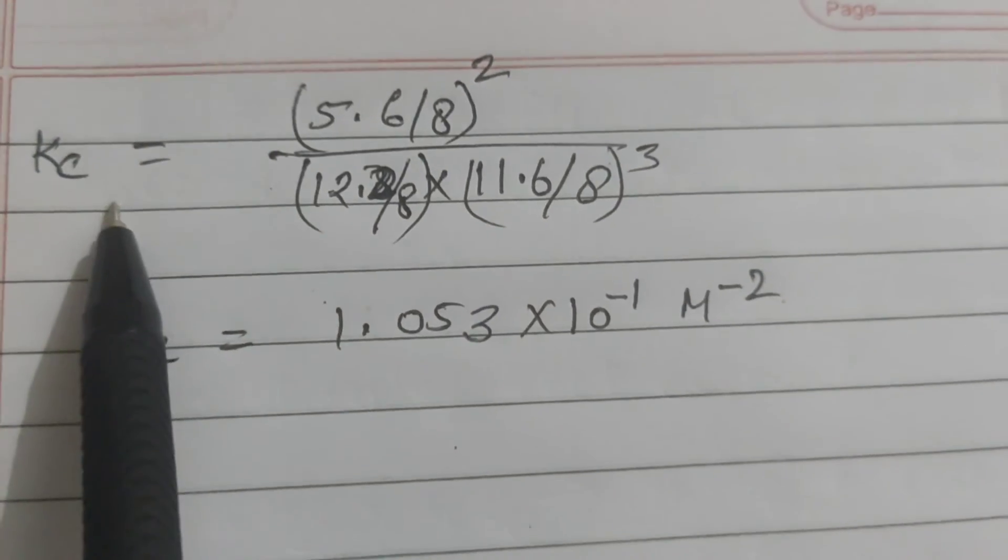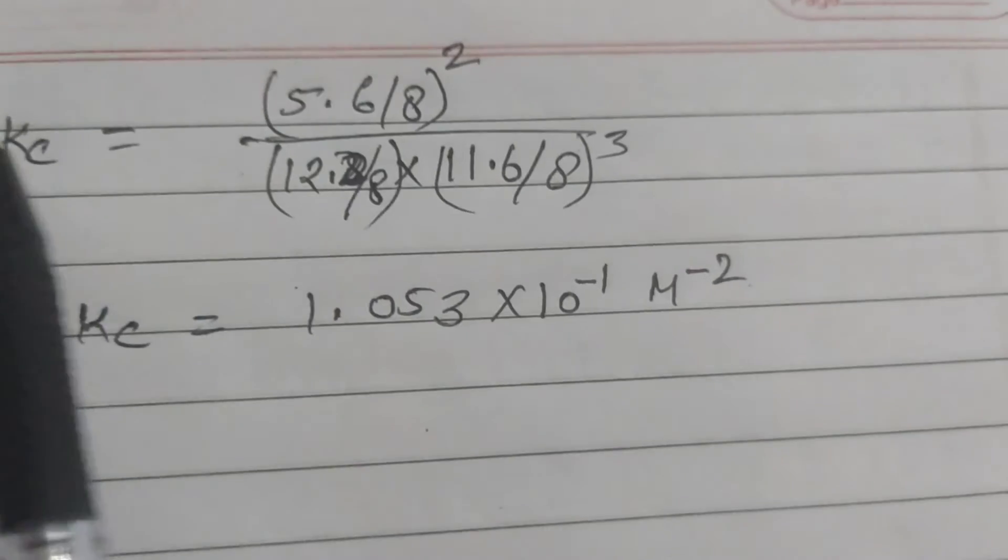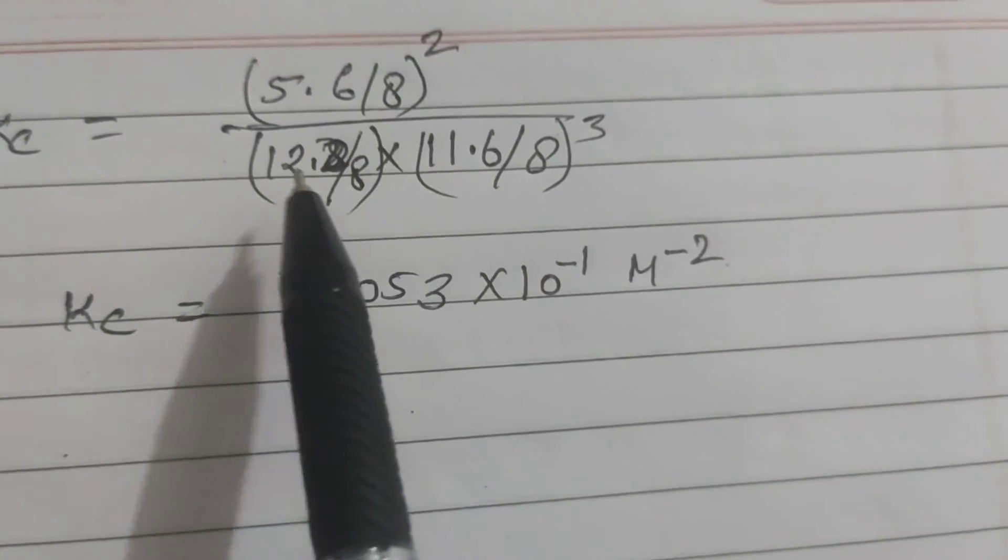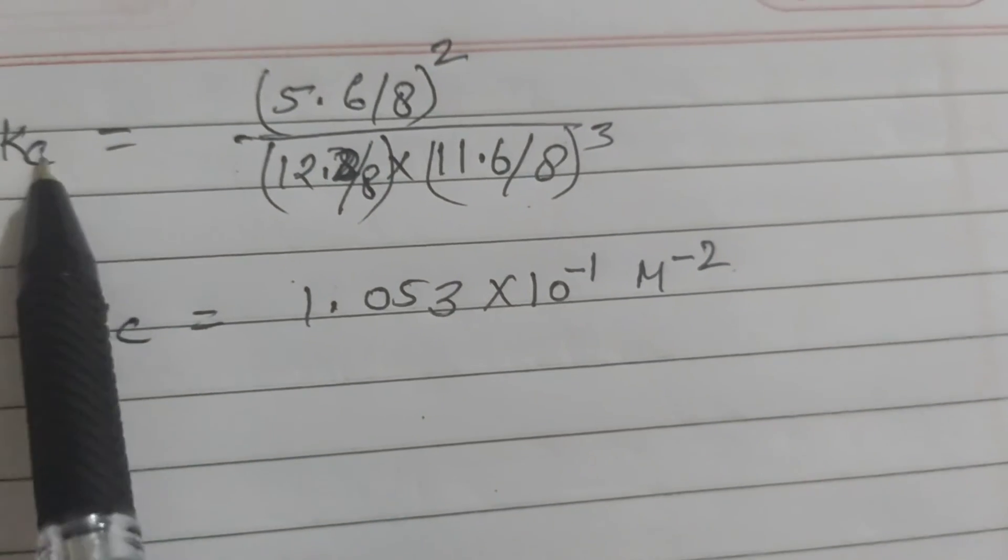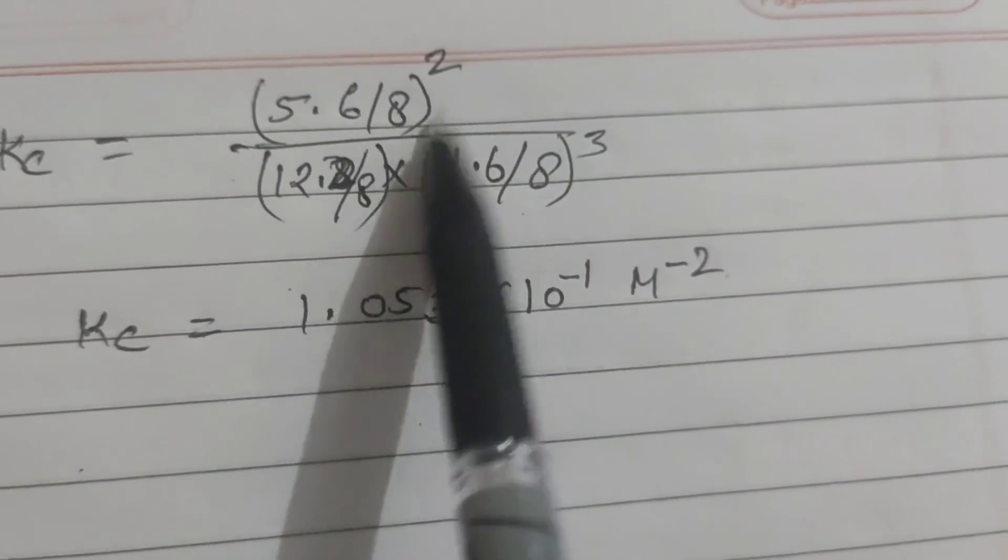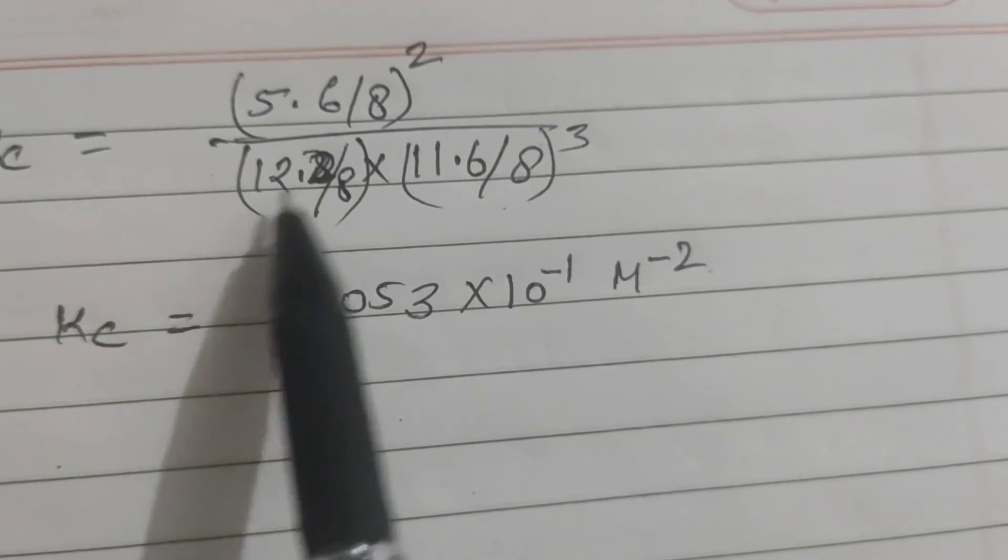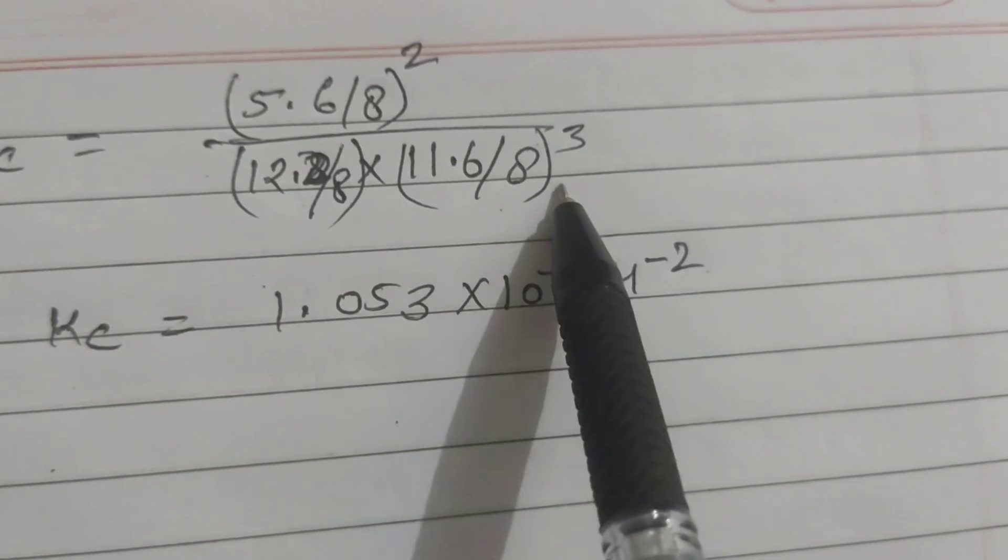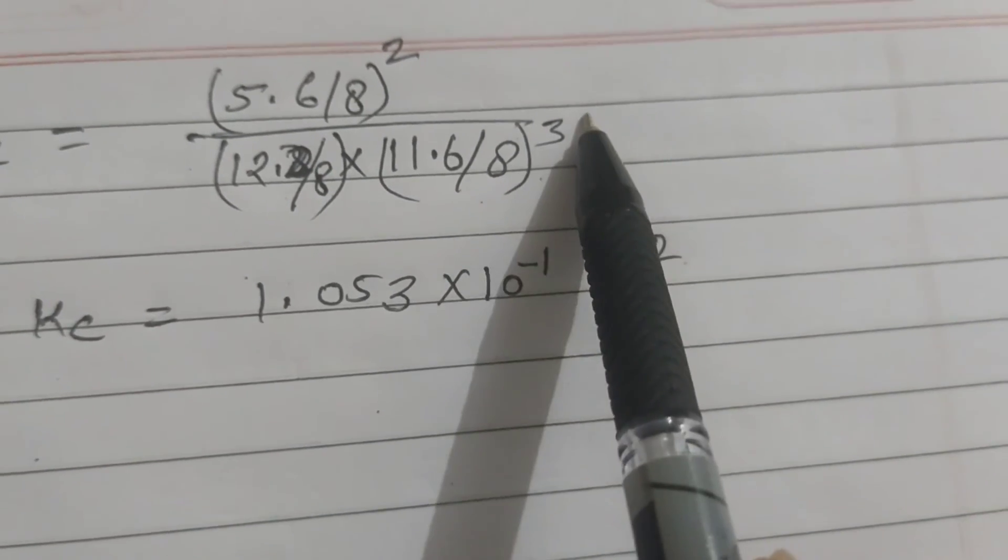Now putting the value of all the constituents, the concentrations of ammonia, hydrogen, and nitrogen in the formula. Kc equals 5.6 upon 8 whole square, upon 12.2 upon 8 into 11.6 upon 8 to power 3.